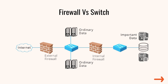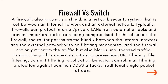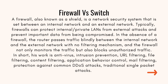Firewall versus switch. A firewall, also known as a shield, is a network security system that is set between an internal network and an external network. Firewalls can protect internal or private LANs from external attacks and prevent important data from being compromised. In the absence of a firewall, the router passes traffic blindly between the internal and external network with no filtering mechanism. The firewall not only monitors the traffic but also blocks unauthorized traffic.